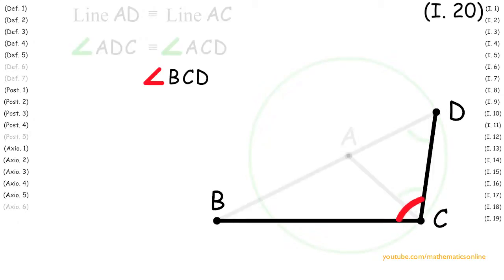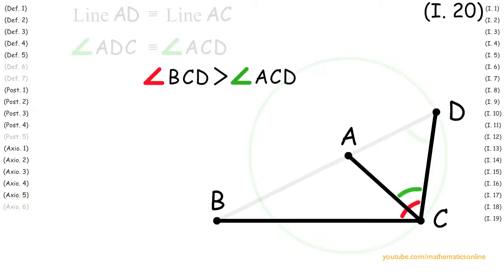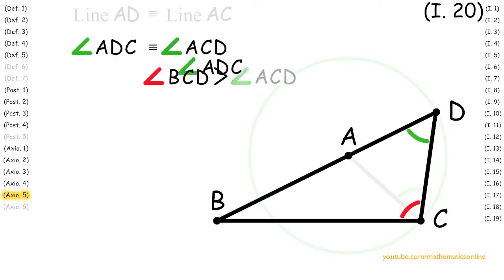Next, looking at angle BCD, by Axiom 5 it is greater than angle ACD. Since we also have that angle ADC is congruent to angle ACD, then angle BCD is also greater than angle ADC.